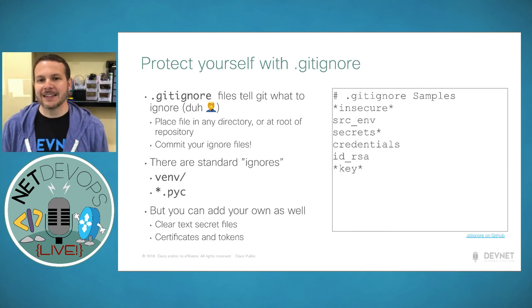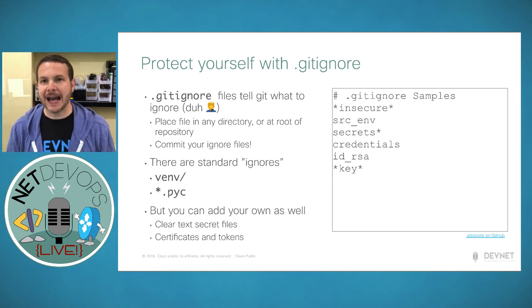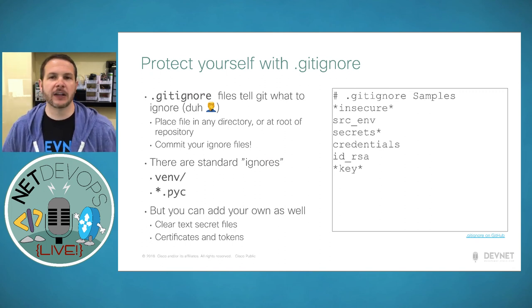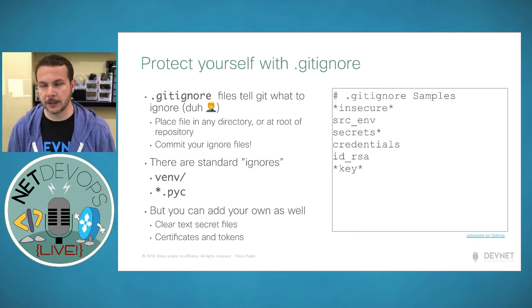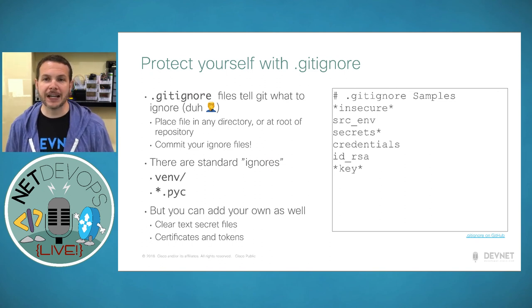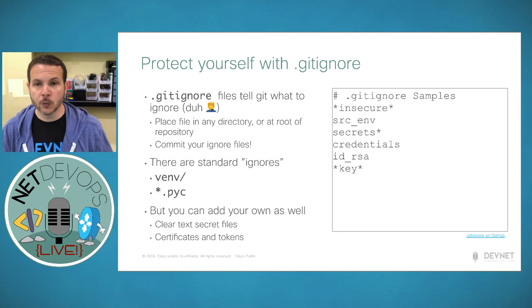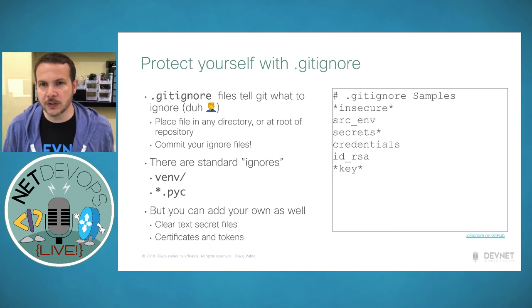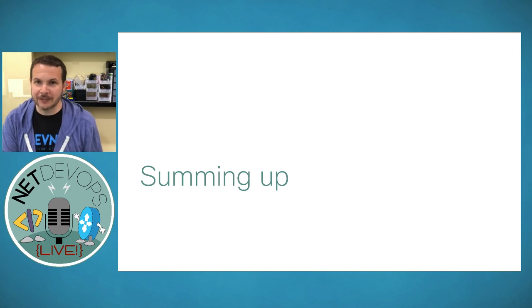Gitignore prevents you from accidentally or unintentionally committing these files. You can always force-add a file using git add -f even if it's listed in the gitignore. What's nice is if you get into the habit of doing 'git add .' to add an entire folder, it will automatically ignore all insecure and secret-based files without you having to explicitly manage files one by one. Gitignore is another quick and easy technique you can leverage to automate and code more securely. And with that, we have come to the end of today's webinar.